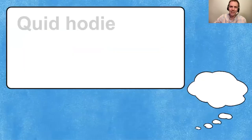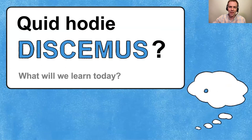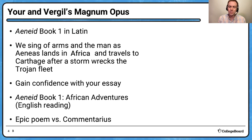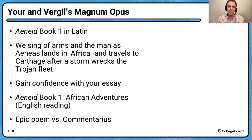Quid hodie discimus? What will we learn today? We're going to focus on Aeneid Book One, the Latin portions, along with the English reading from the Aeneid — his adventures in Africa. We sing of arms and the man, that famous line, as Aeneas lands in Africa and travels to Carthage after a storm wrecks the Trojan fleet. We're going to gain confidence with your essay and also talk about genre, since we're moving to a new genre now that we're reading Virgil's Aeneid, which is different from Caesar's commentarius.